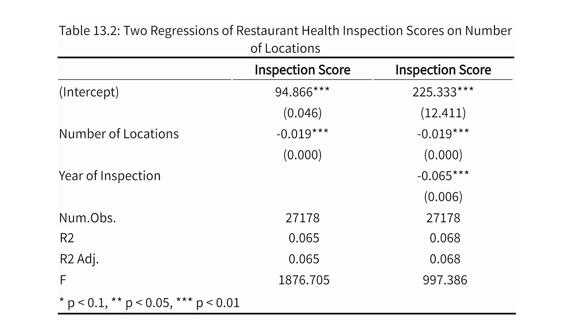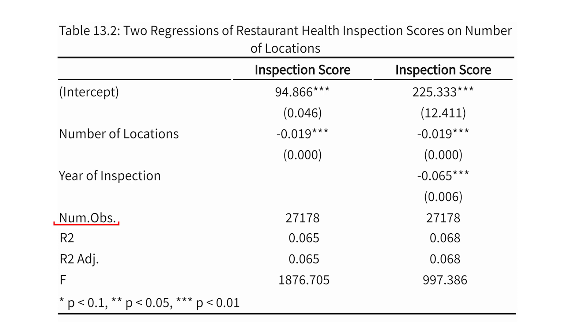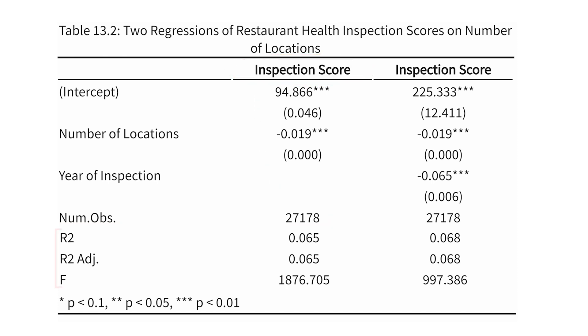Looking below to some of the summary statistics about the regression — this is a common thing you will see in regression tables. The first thing we see is the number of observations: this regression was estimated using 27,178 observations. We also see what are called model fit statistics — these are statistics that give some indication of the quality of the model overall. They're not related to specific coefficients; they're related to the model as a whole.